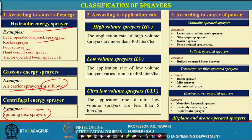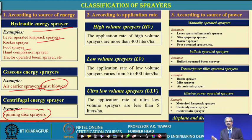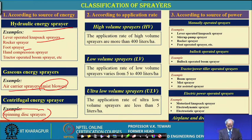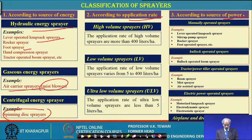We need a certain pressure depending on the crop — whether it is a cereal crop, orchard crop, plantation crop, or tall trees. On the basis of application rate and source of power: source of power could be manually operated, using levers, rockers, or foot-operated systems.